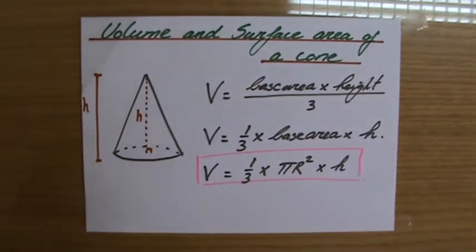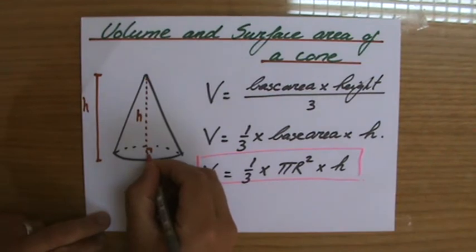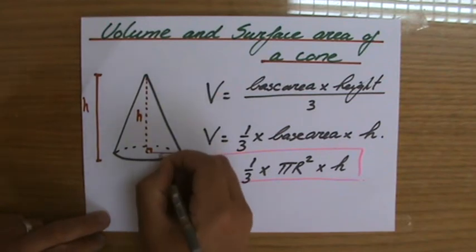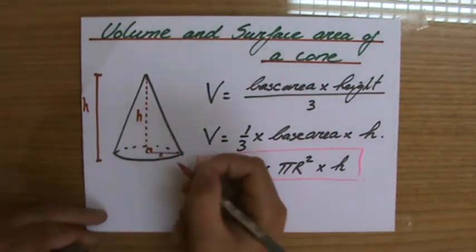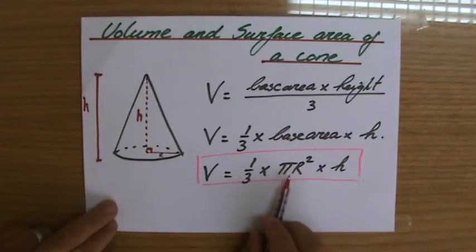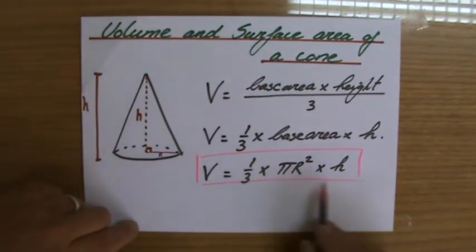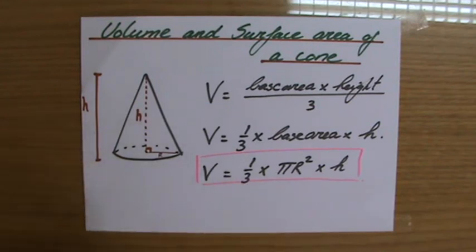Now what is the radius? Well I hope you are aware of that now. The radius is that line from the center of the circle to the circumference, so that is the radius. Pi r squared base area times the height and all of that divided by 3, that is for the volume of a cone.